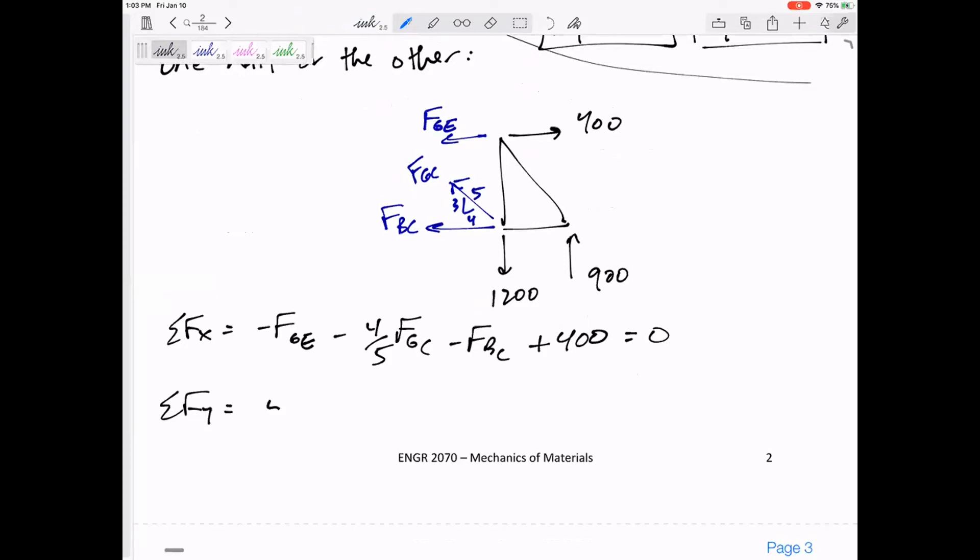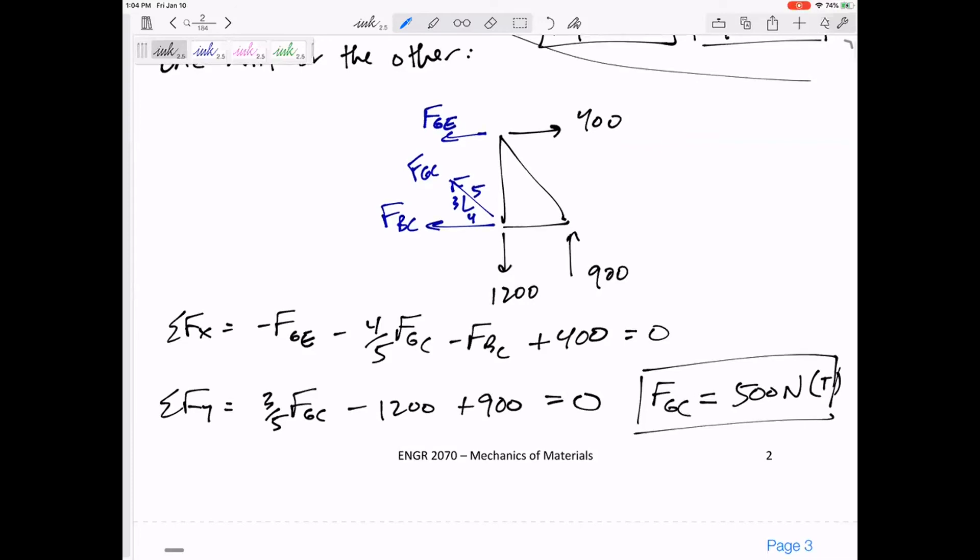The three-fifths component of FGC minus 1200 plus 900 equals zero. So FGC I can solve for that one first—comes out to be positive. Positive means I drew it the right direction. I will always guess tension. Notice I guessed it was pulling outward, so I guessed tension. So it is 500 newtons and in tension. Maybe I'll box that in because that's what it's asking for.